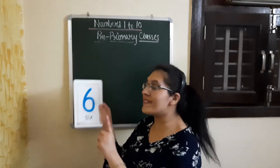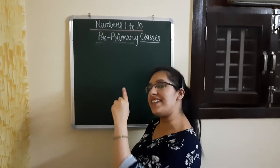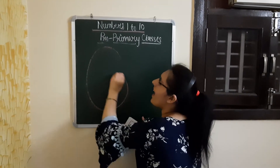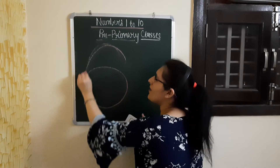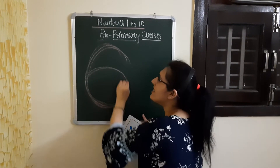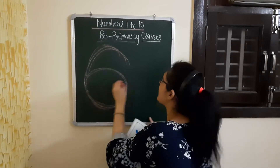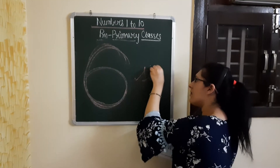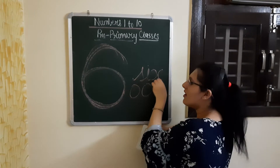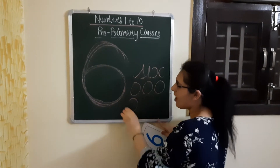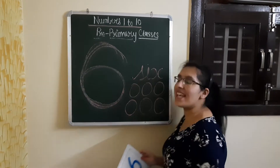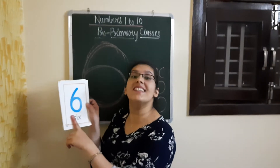Now comes number 6. So let us make it: down and round. Down and round. This makes number 6. 1, 2, 3, 4, 5 and 6. This is number 6.